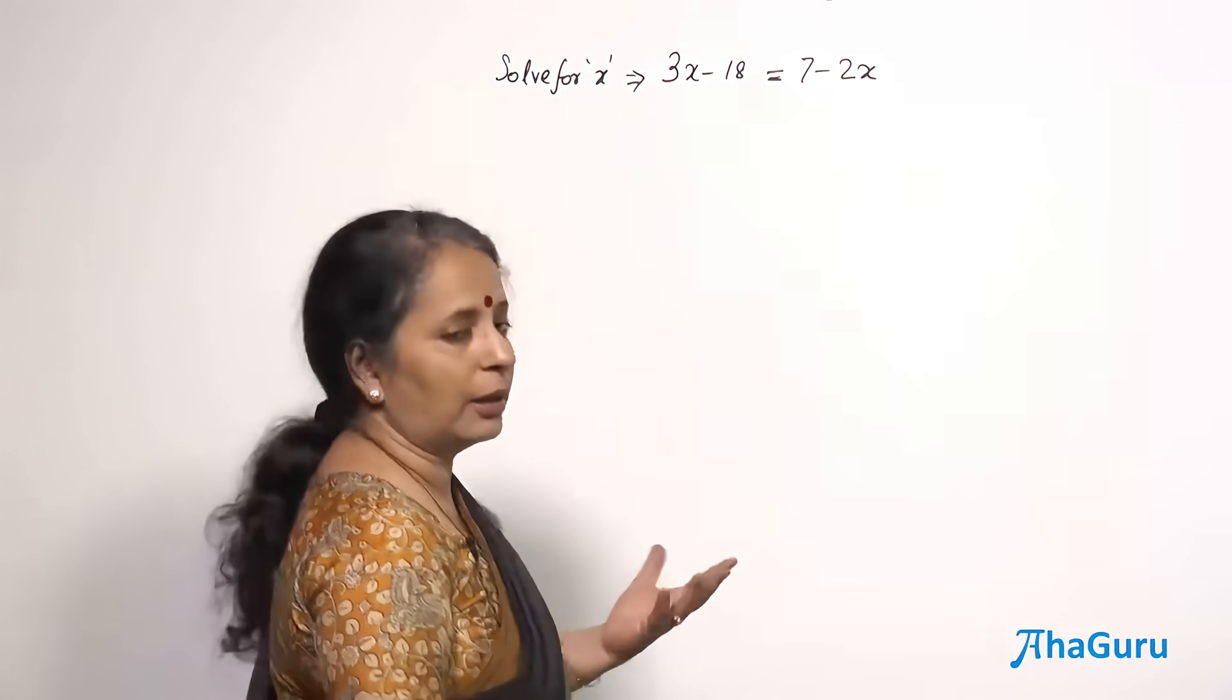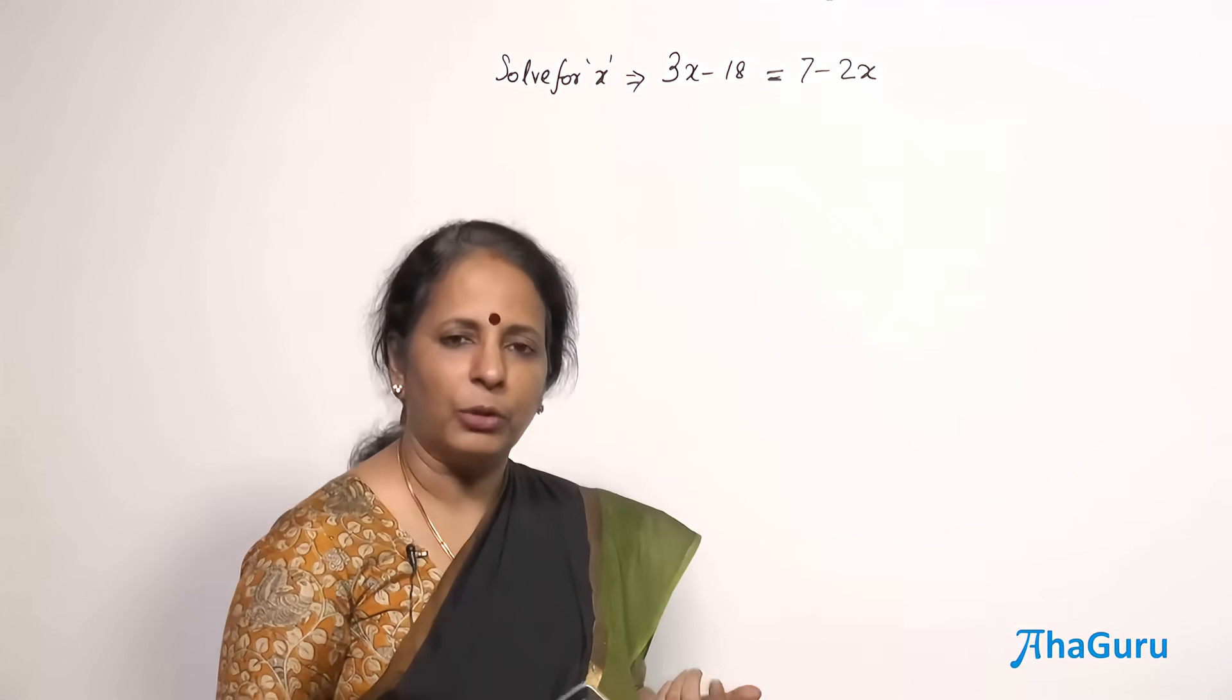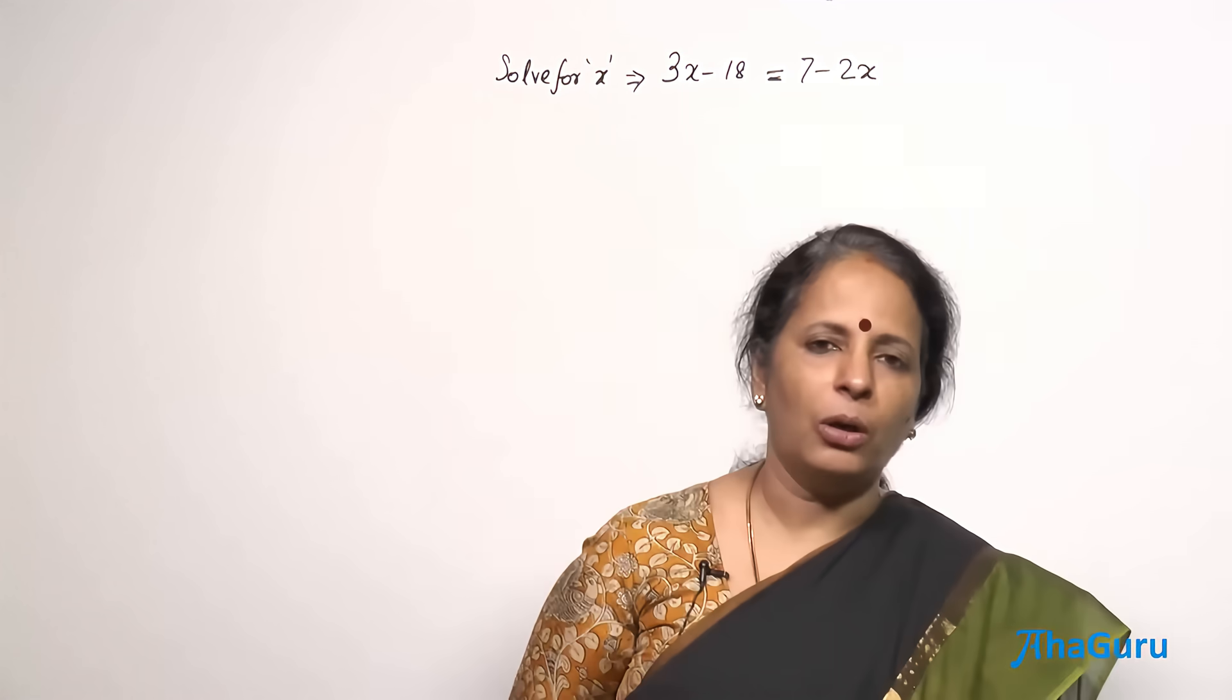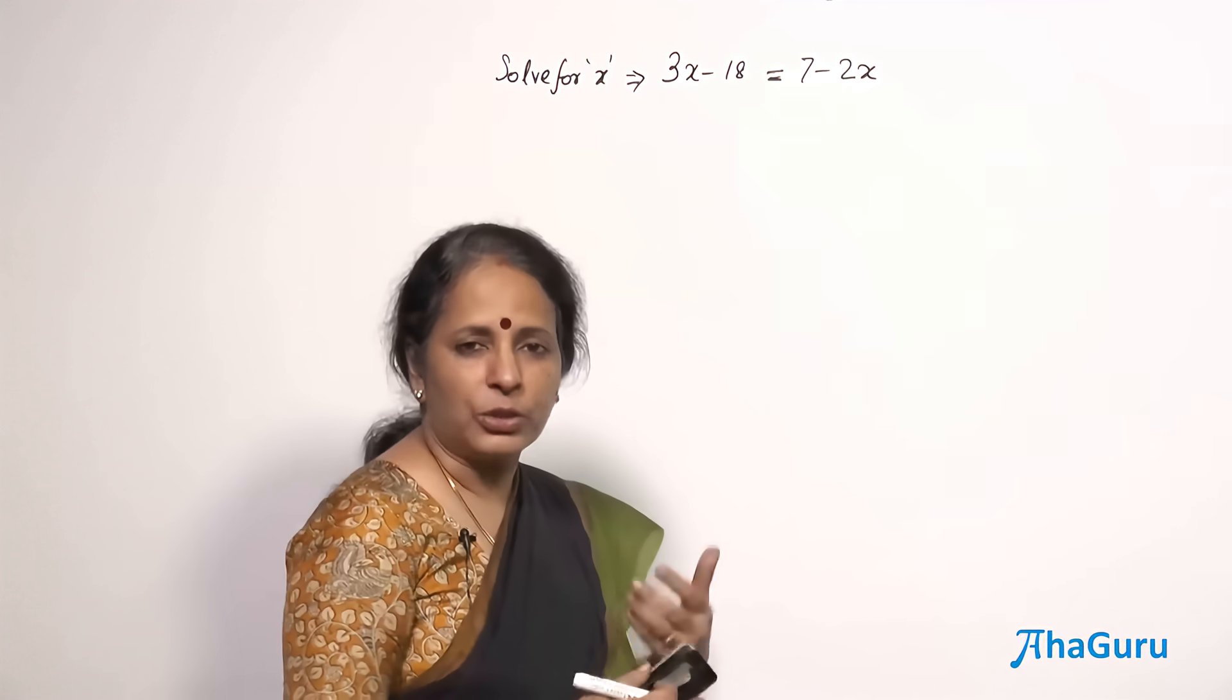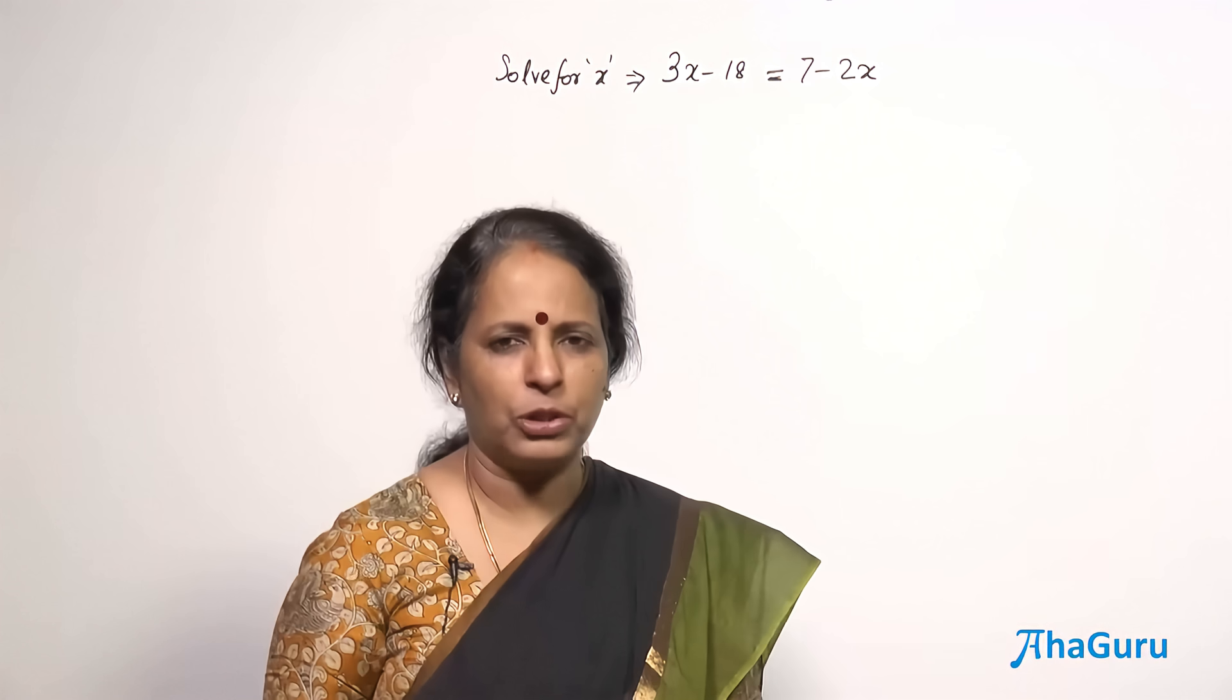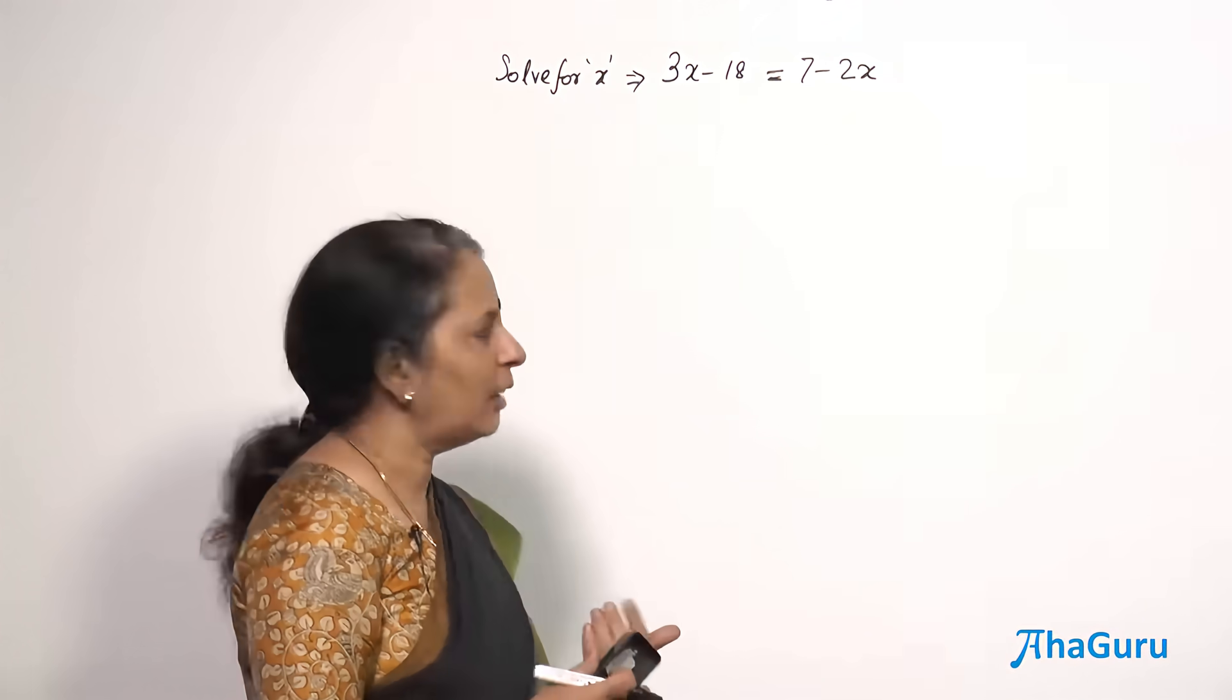So what is the standard procedure? We take all the variables, which is x, all the terms which have x to one side, preferably to the left. There is no standard rule that it has to be taken to the left only. If everything is on the right, then also it is not a problem, but we are used to having that on the left.